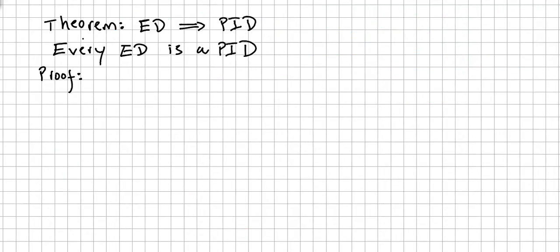So we move into a theorem, now that we have the concept of Euclidean domain. Euclidean domain implies principal ideal domain. So every Euclidean domain is a principal ideal domain, and the proof is really simple.